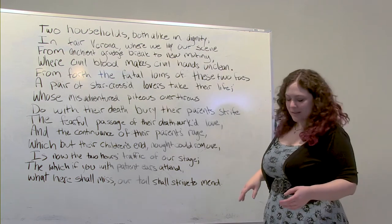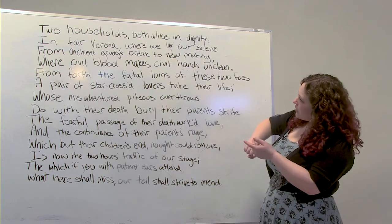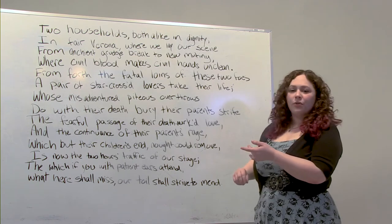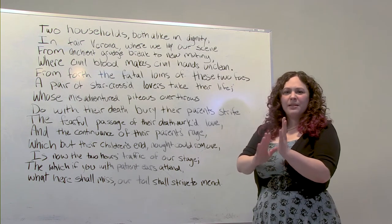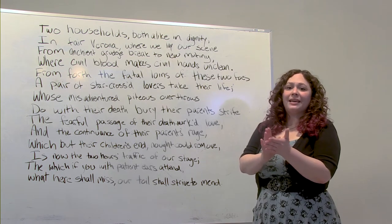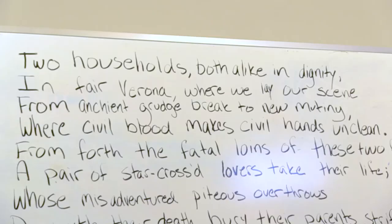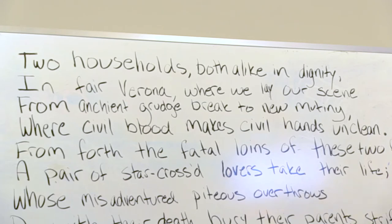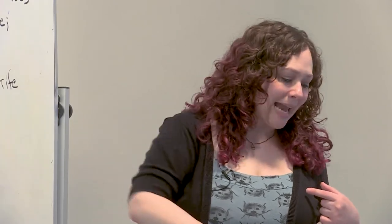Let's clap out our stressed and unstressed syllables. Look at our first line: 'Two households, both alike in dignity, in fair Verona where we lay our scene.' We've got that nice unstressed-stress pattern, and there are 10 syllables. So that means we are dealing with text that is in iambic pentameter.